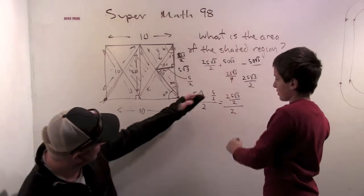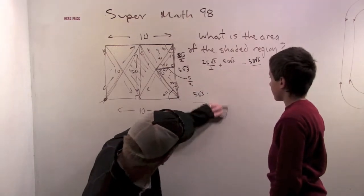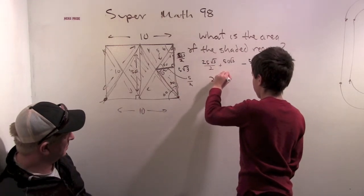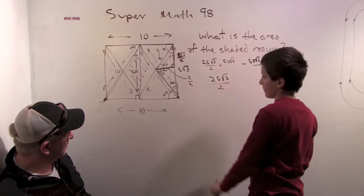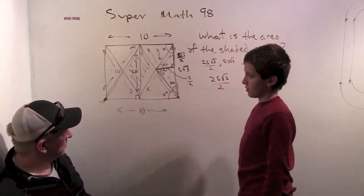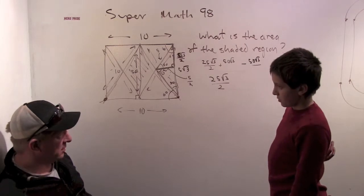So, which means we're left with 25 root 3 over 2. And what's that? That's the area of the rhombus.